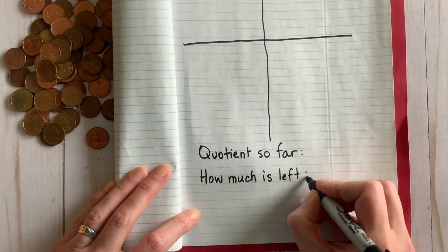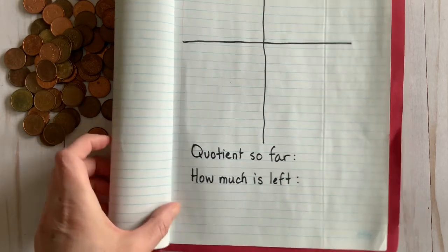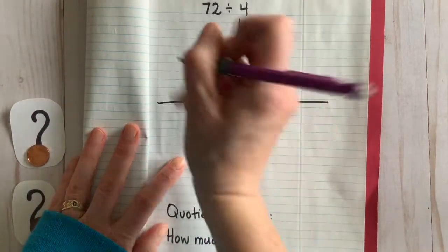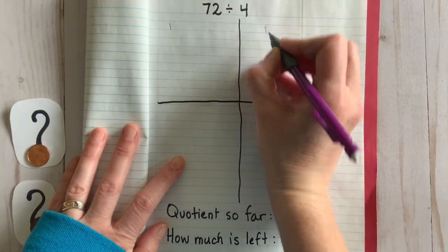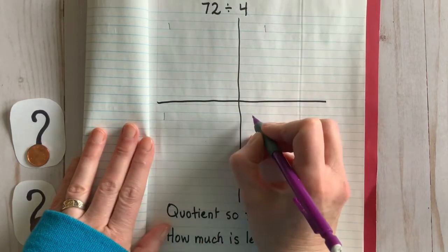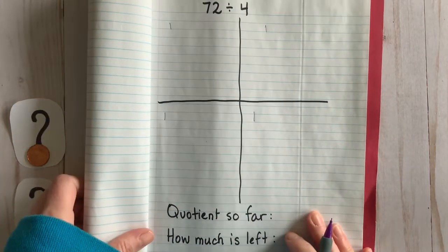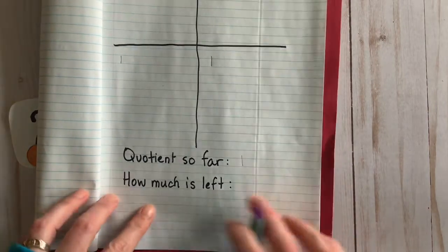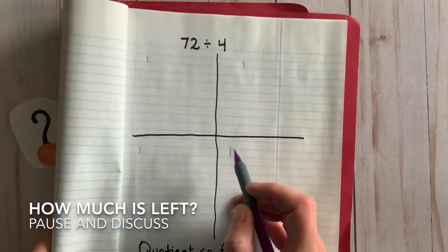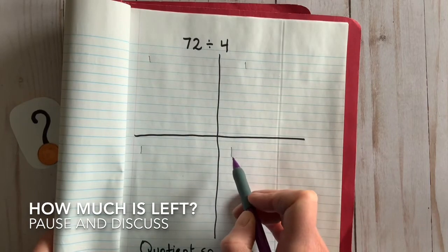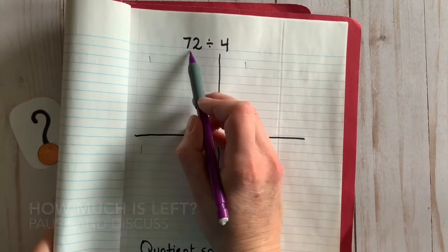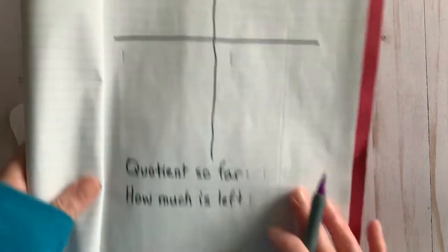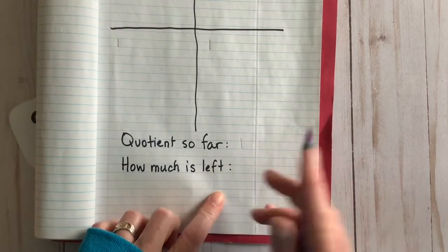We're going to start nice and slow using tallies instead of pennies. Take a look. The quotient so far is just one. How much of the dividend is left? Pause and discuss what you think. Hopefully you had the chance to see that we didn't just use one, we used four out of the total dividend.